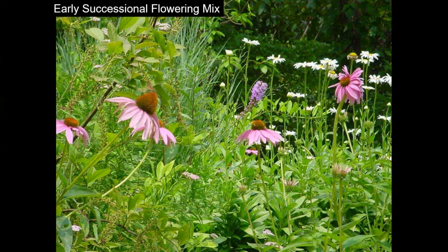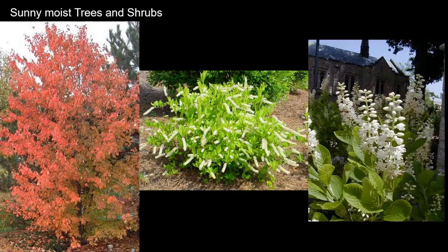Here is an early successional flowering mix in just a 10 by 10 foot area — so you don't need a large space, but look at the diversity in this photograph. Think about the trophic levels of wildlife we're supporting as well as the eye candy for the consumer. It's a beautiful landscape. For moist, sunny trees and shrubs: red maple is what I call the vagabond of plant communities — living in wet, dry, mountaintop, valley, and across the entire United States — a fast-growing tree with great shade.